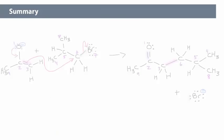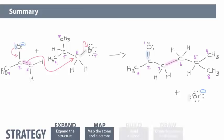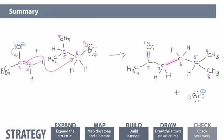In this section, you learned to draw the product of an intermolecular reaction, given the starting materials and electron-pushing arrows. We did this by using specific strategies, including expanding the structure, mapping, drawing the products, and checking our work.